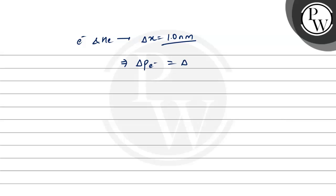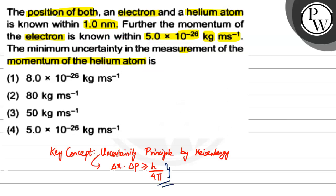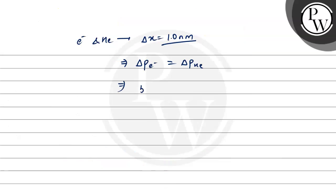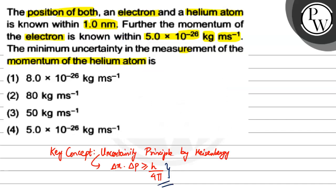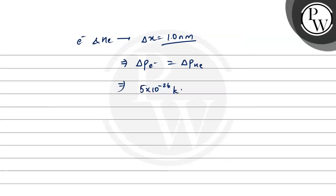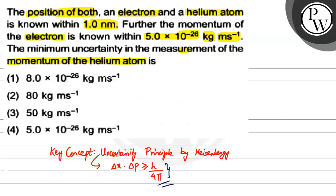We know Δp is given as 5 × 10⁻²⁶ kg·m/s. So this is also going to be equal to the uncertainty in momentum of helium, the minimum uncertainty in the measurement of momentum of helium atom.